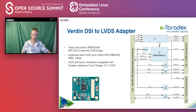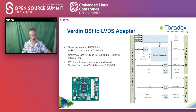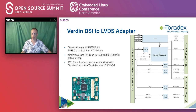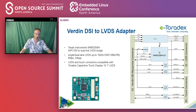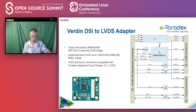Another adapter more common in the embedded world is the Verdin DSI to LVDS adapter. That one uses a Texas Instruments SN65DSI84 — a MIPI DSI to dual-link LVDS bridge. It supports configurable single or dual-link LVDS up to wide full-HD resolution, or in single channel up to extended HD at 60 frames per second, with up to 24 bits per pixel. This adapter also integrates a capacitive touch controller, and is designed to directly connect to the Toradex capacitive touch display, the 10-inch one.